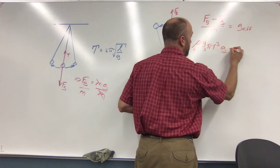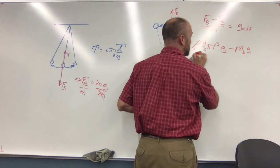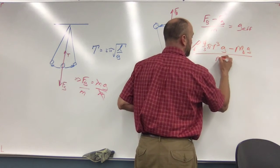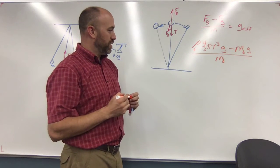Times g minus mass of the balloon times g, divided by mass of the balloon. Okay, so now...